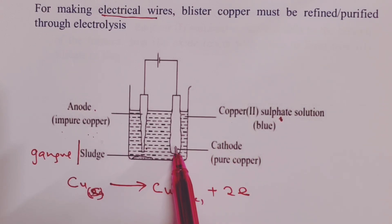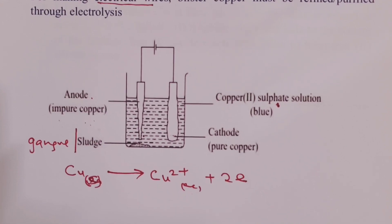Our cathode is made of a thin strip of pure copper. But here, we shall have the deposition of pure copper happening. So our cathode will keep on becoming bigger and bigger as the process continues.